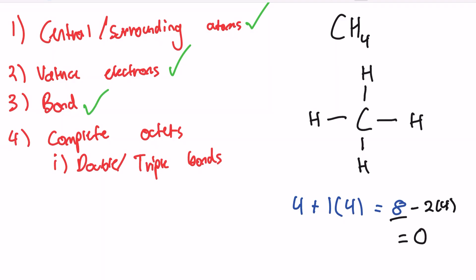We would now usually go to step four, but because we have zero valence electrons remaining, we're pretty much done. We just need to check whether we've drawn this correctly, starting with making sure we have the correct number of electrons per atom. The goal of an atom is to be as stable as possible, which happens when they have eight valence electrons. Hydrogen only wants two valence electrons — it gets two from the bond, so it's fine. Carbon wants eight, and it gets two from each of its four bonds, giving it eight valence electrons. Carbon is happy.